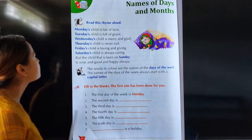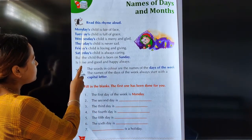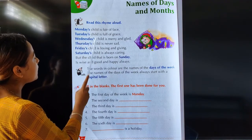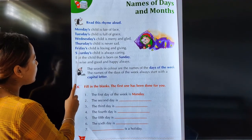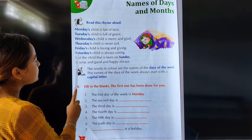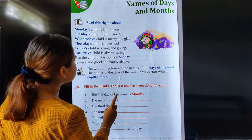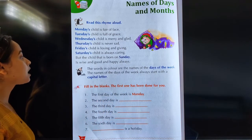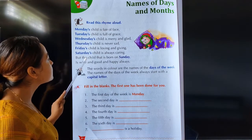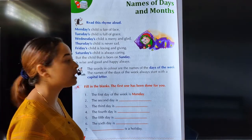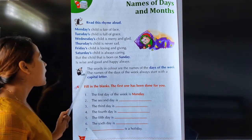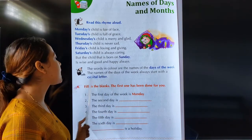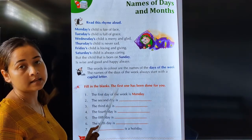What are they? They are Monday, Tuesday, Wednesday, Thursday, Friday, Saturday and Sunday. The words in colour are the names of the days of the week. And the names of the days of the week always start with a capital letter.